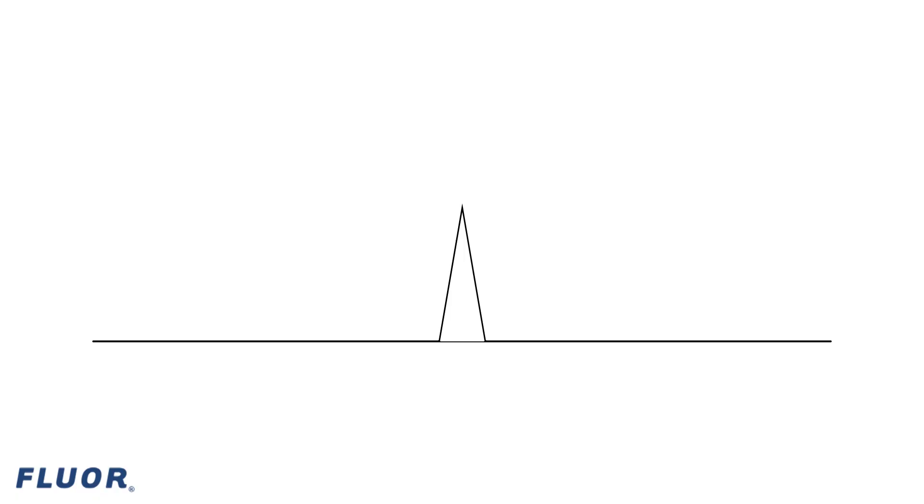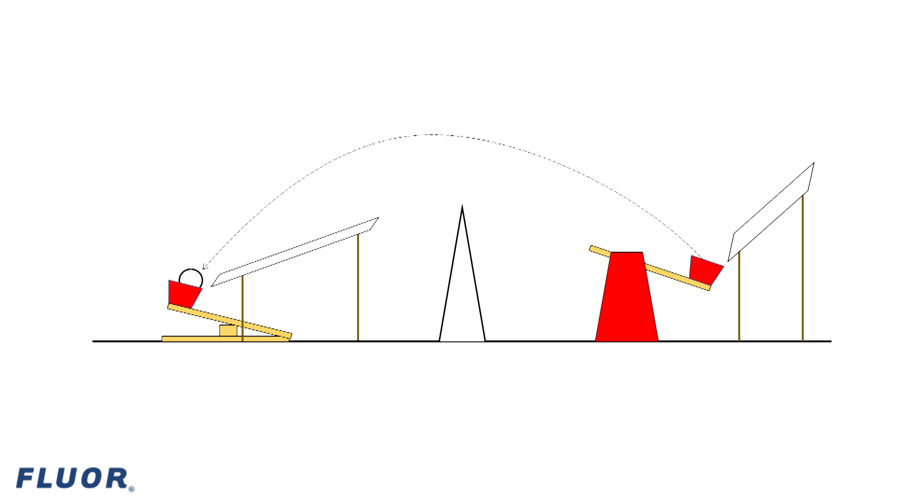This year's competition is based on the game of volleyball. Your goal is to build two machines that can launch a ball back and forth over a net. You will try to get the ball over the net as many times as possible within a five-minute time limit, or until the ball touches the ground, whichever comes first.